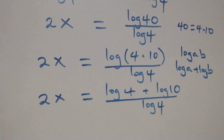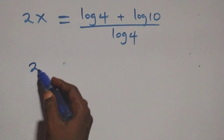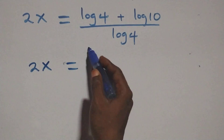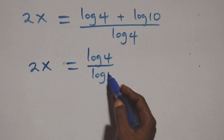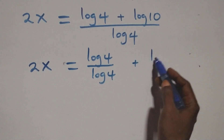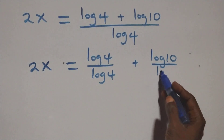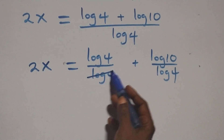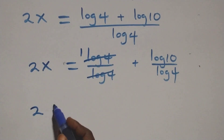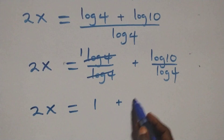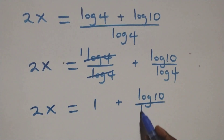Next step: we separate this into two fractions and have 2x equals log 4 over log 4 plus log 10 over log 4. Log 4 over log 4 cancels to 1, so 2x equals 1 plus log 10 over log 4.